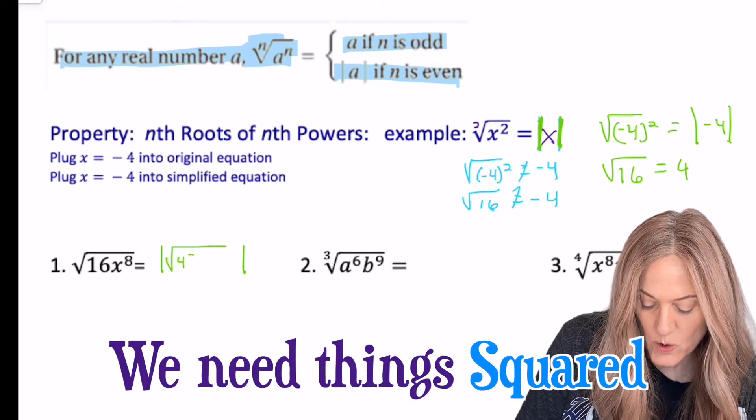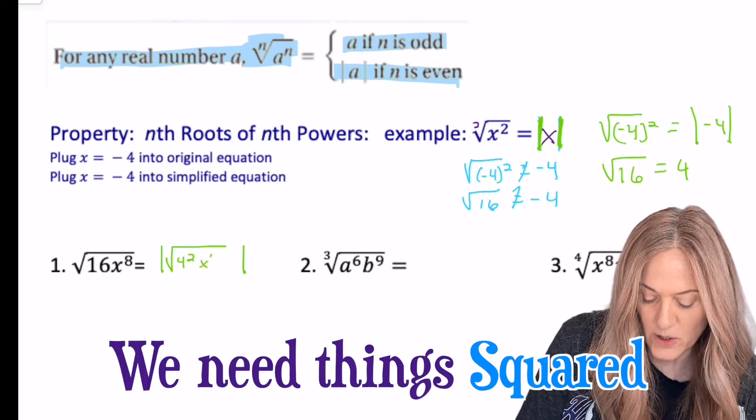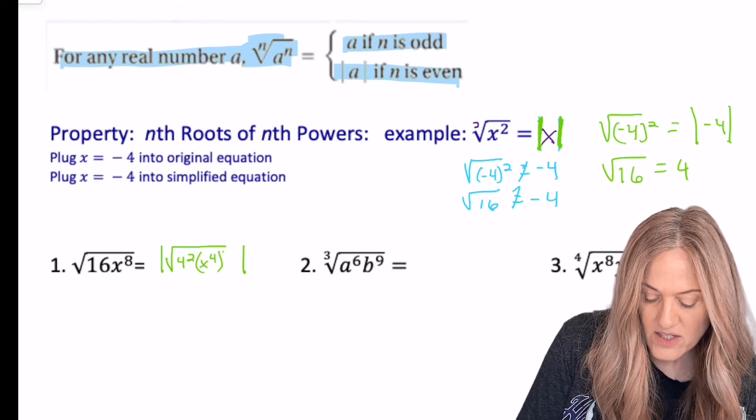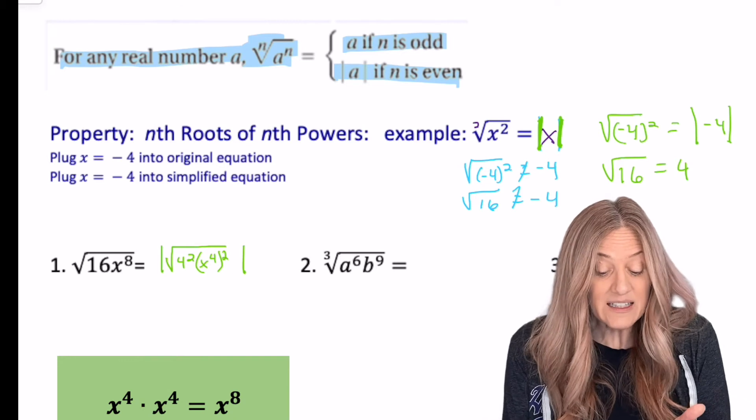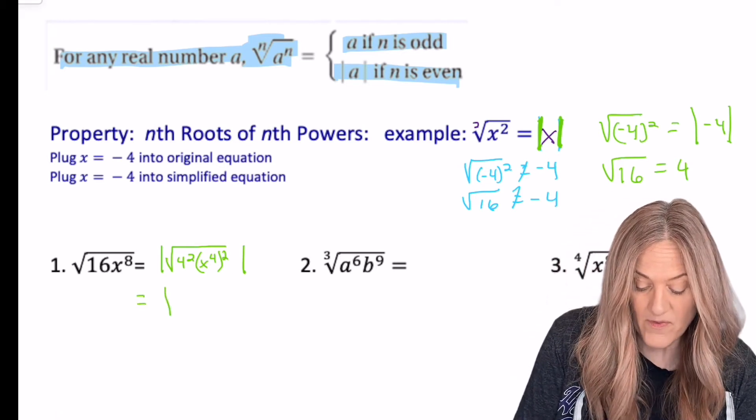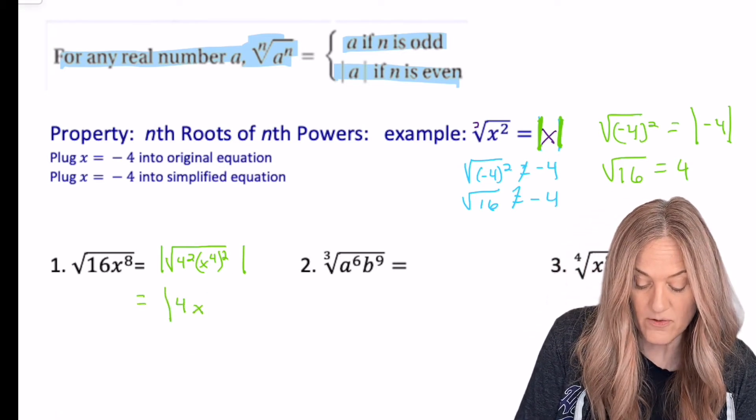remember we want things that are squared. So if I use that idea of close by multiply, x to the fourth squared is x to the eighth. And then I can clearly see that this would be the absolute value of 4x to the fourth.